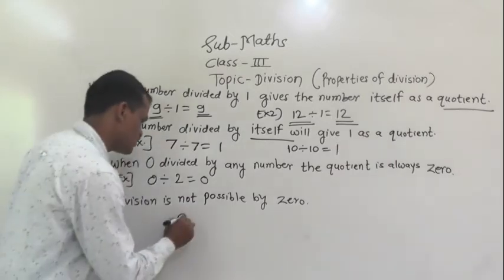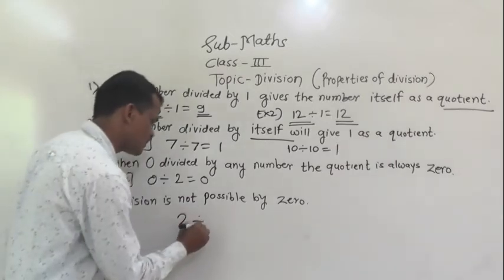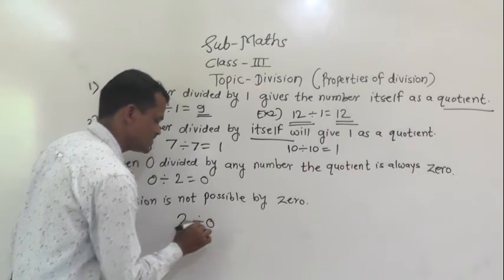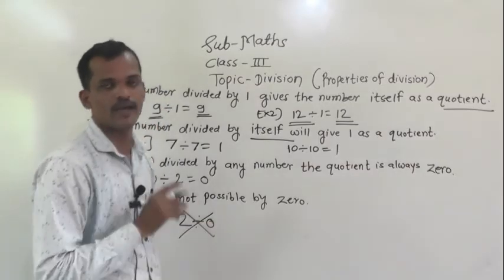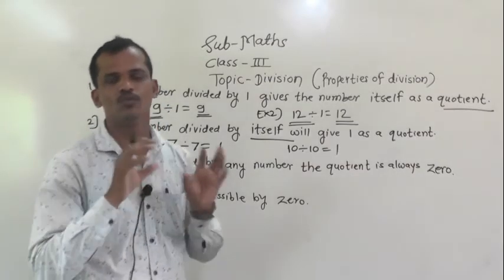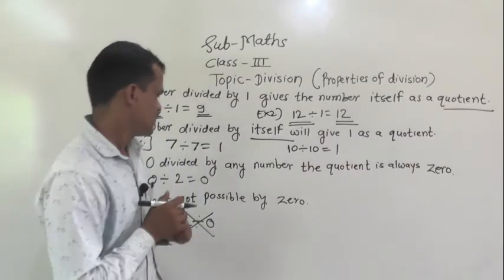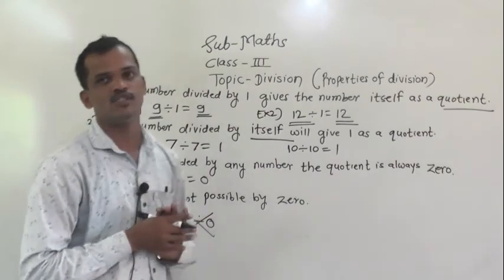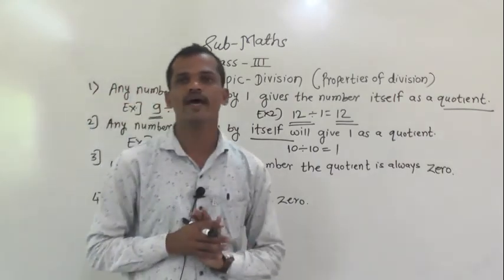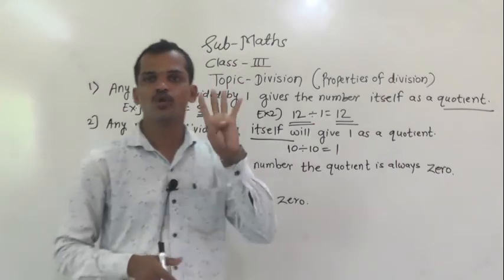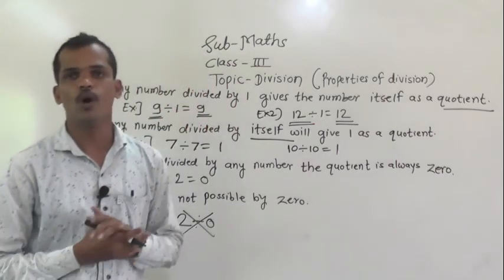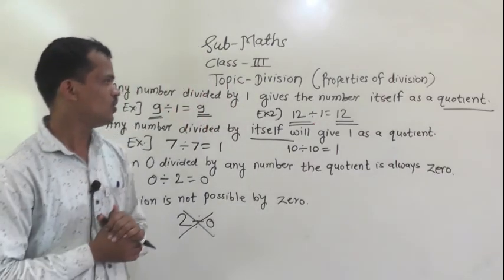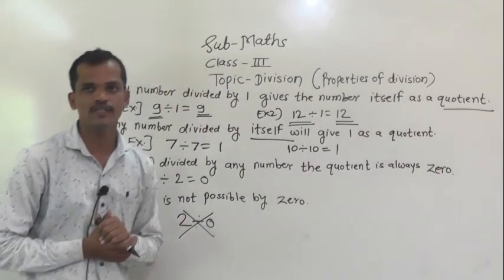And the last property: division by 0 is not possible. Here, 2 divided by 0 is not possible — we can't make groups of 0s. So, division is not possible by 0. We have learned these 4 properties today. I hope you understood this. Thank you.